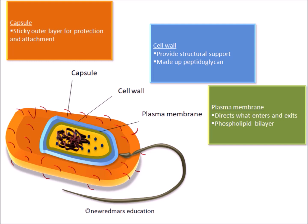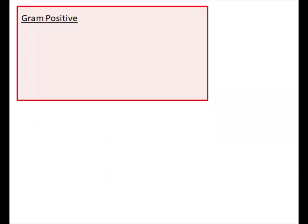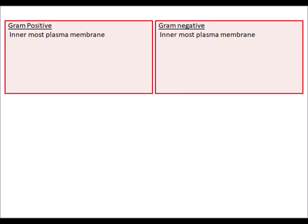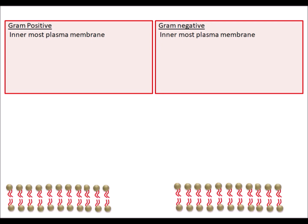Here we focus on the cell wall because it plays a very important role in Gram staining. First, let's compare Gram-positive and Gram-negative bacteria. Both have an innermost plasma membrane. The Gram-positive bacteria has a thick layer of peptidoglycan cell wall, whereas the Gram-negative bacteria has a thin peptidoglycan cell wall.